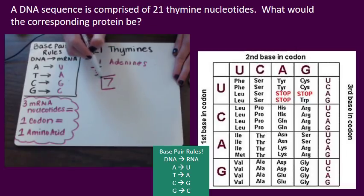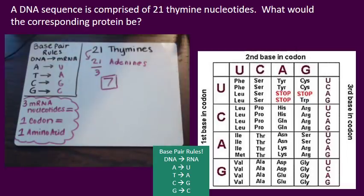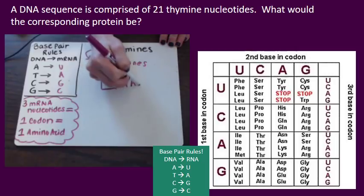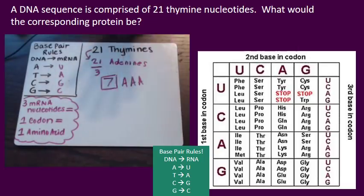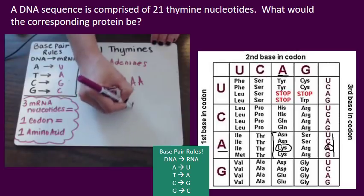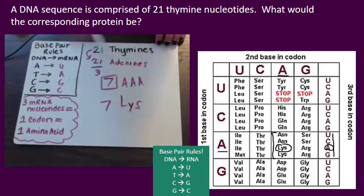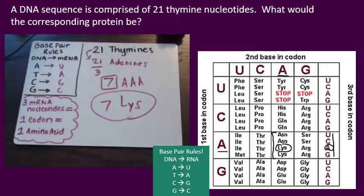So that means we're going to have seven codons coding for seven amino acids. I just need to figure out what AAA codes for on the chart. A is our first letter, A is our second — that puts us in this box — and A is our third letter, which lines up to be lysine. And how many would we have? Seven. So seven lysines is our corresponding protein.